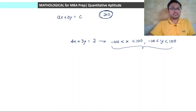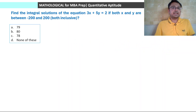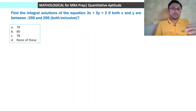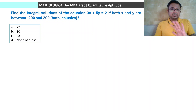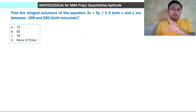Let's start the session. First question: find the integral solutions of the equation 3x plus 5y is equal to 2, if both x and y are between minus 200 and 200, both included — so if minus 200 comes as a solution it is included, and 200 is also included. The first thing we do in any such question, as we have been doing, is find the first solution, then we get a pattern.